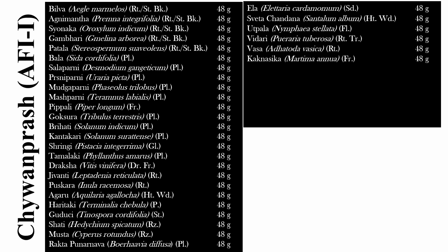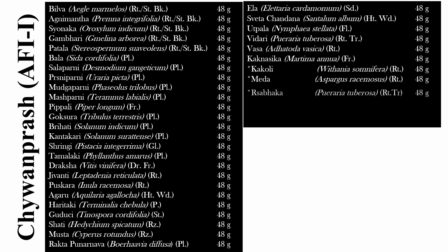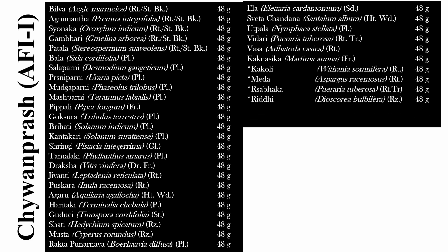For the remaining decoction herbs not available in market, substitutes are used: for Kakoli, Withania somnifera i.e. Ashwagandha is used; for Medha, Asparagus racemosus; for Rishbhaka, Pueraria tuberosa; for Riddhi, Dioscorea bulbifera; and for Jeevaka, Pueraria tuberosa are used. The decoction is prepared in water.